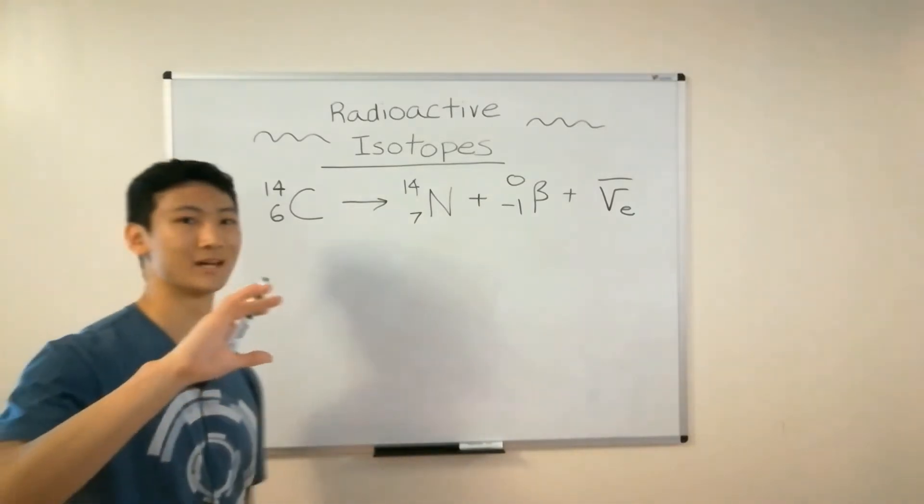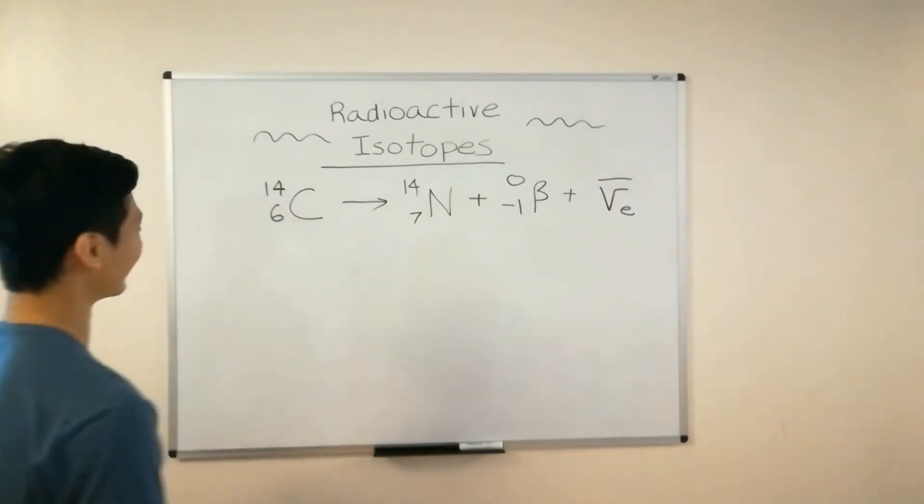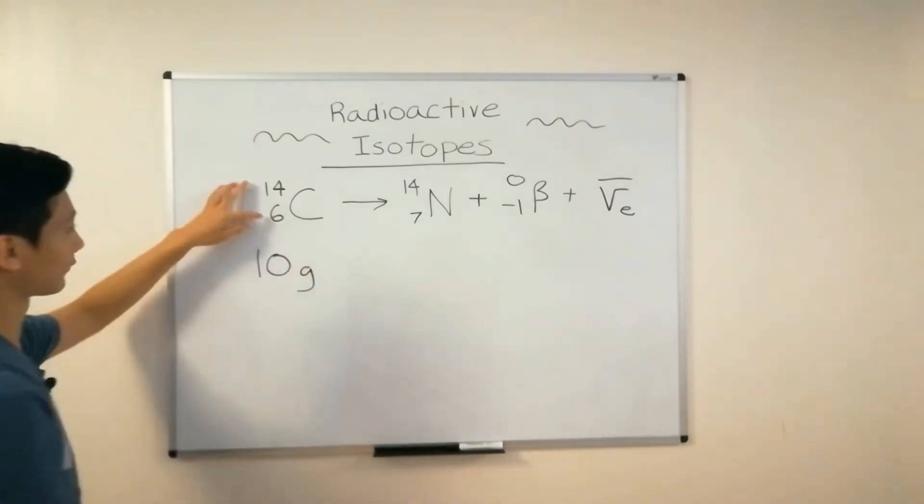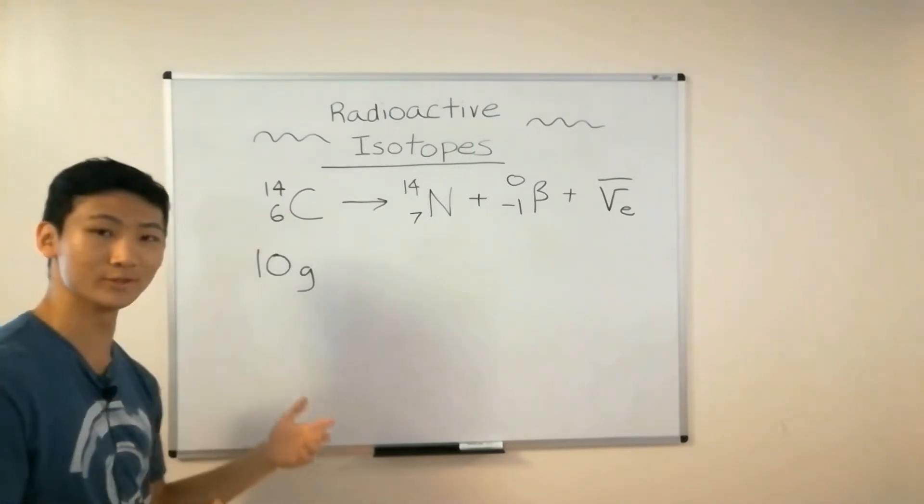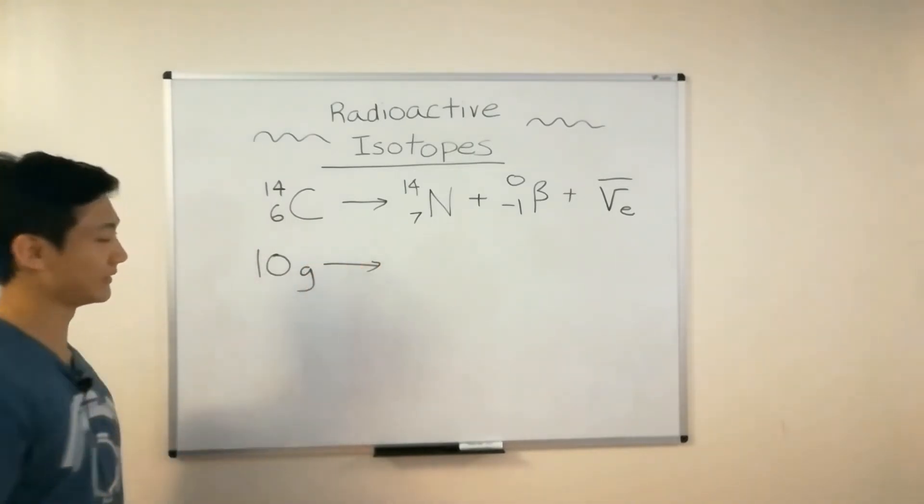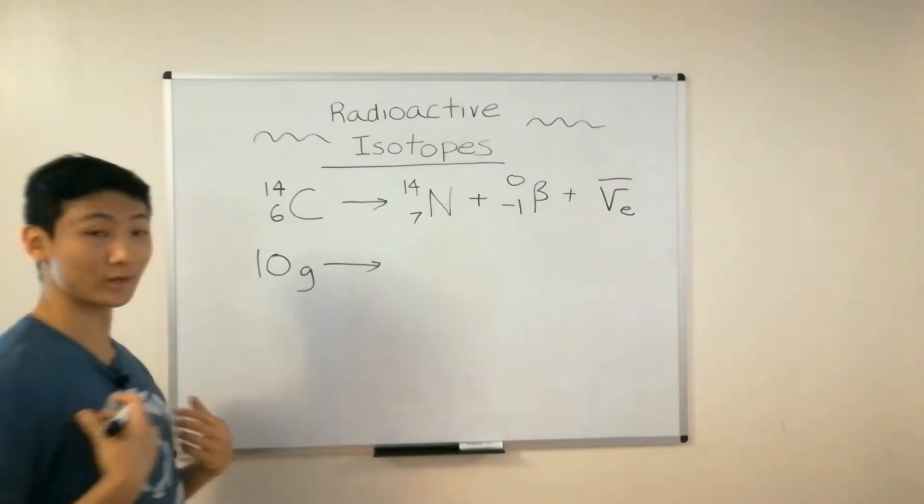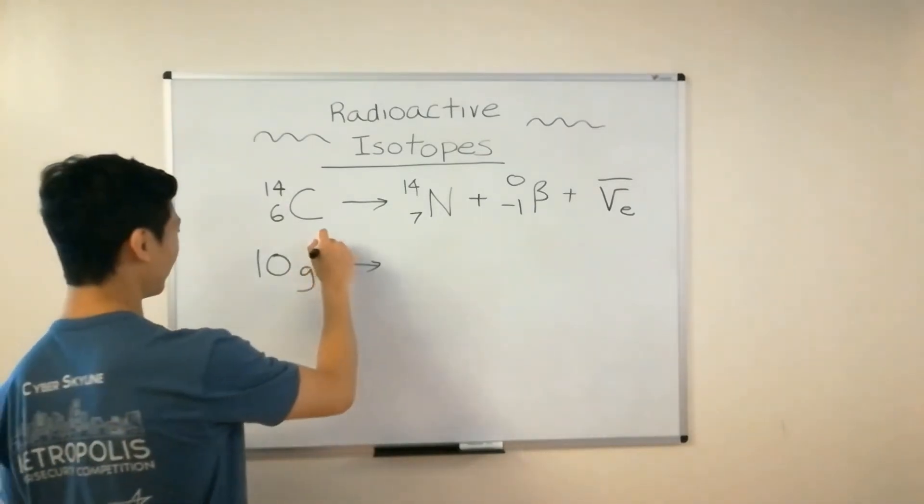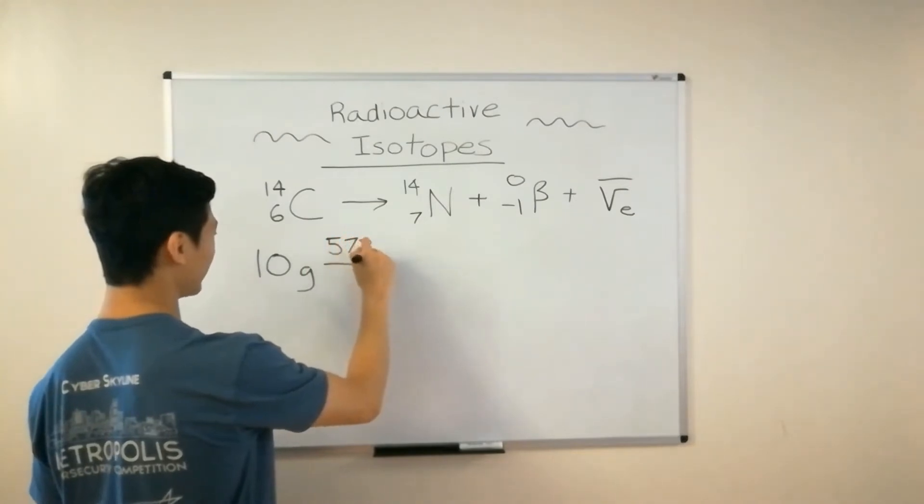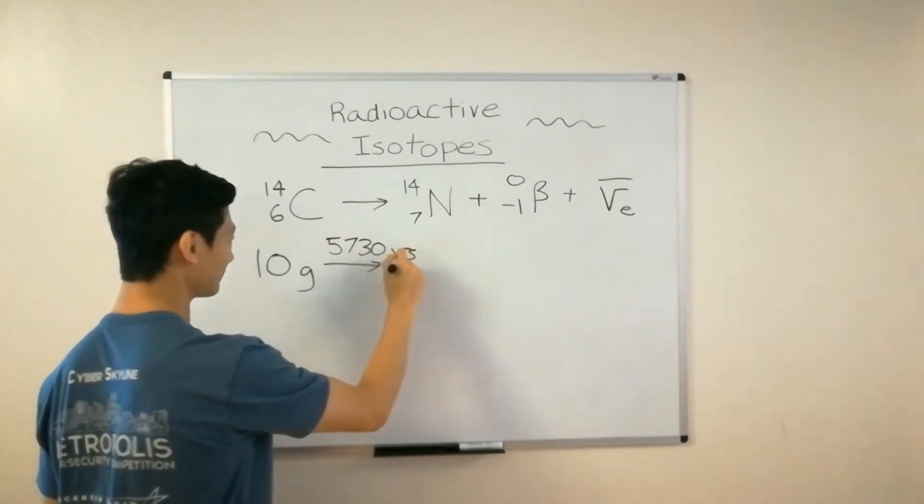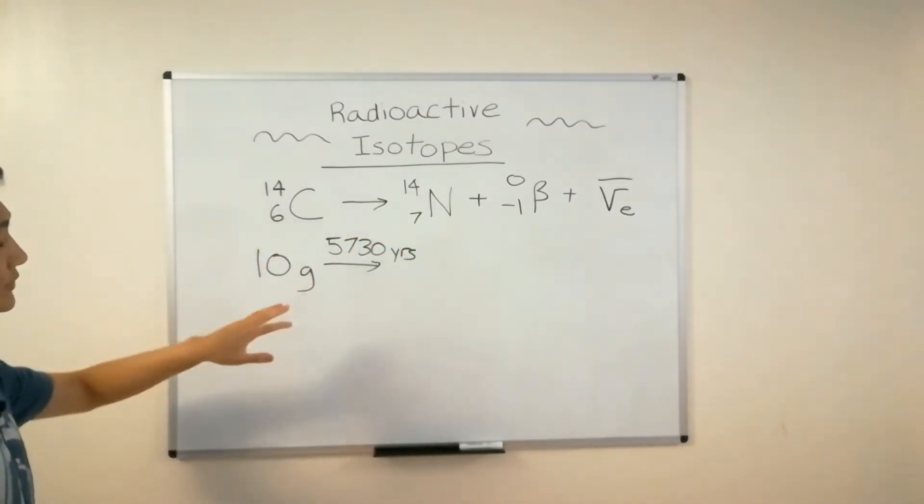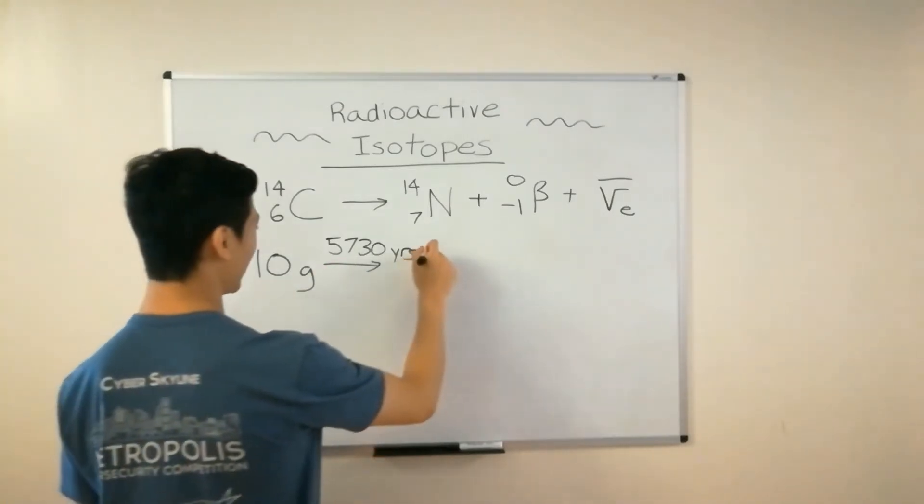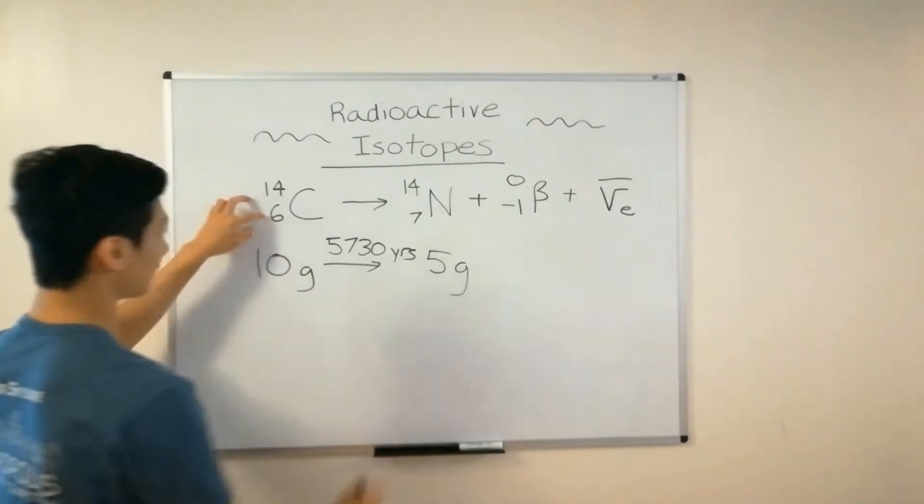So let's assume that you're some immortal being, and you have 10 grams of carbon-14 just lying around, because that's what you do. And then you're sitting around, and you're immortal, you can binge-watch all the Netflix TV shows if you want, and you sit there for 5,730 years. That's a lot of TV shows. But you come back to your sample, and after that time, you realize that you've got 5 grams of carbon-14 left.